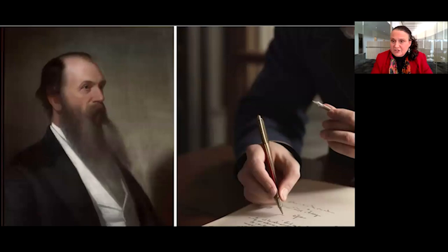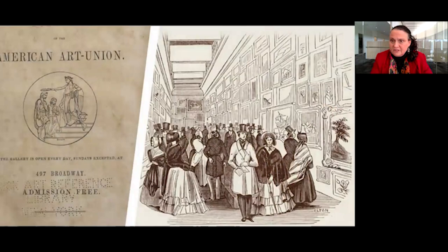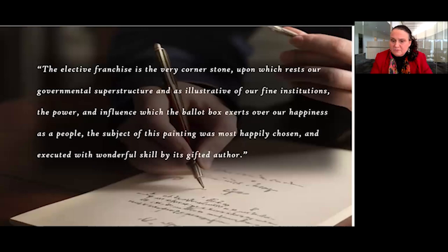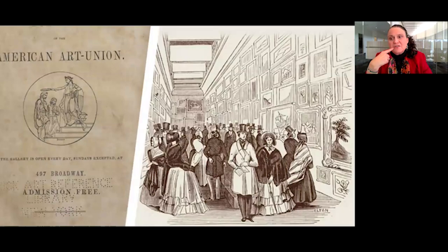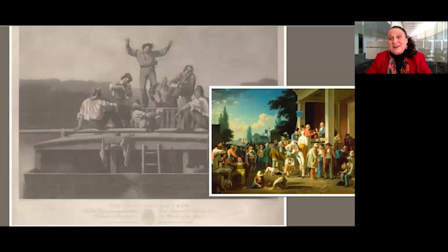In 1852, Bingham's closest friend, Missouri lawyer and statesman James Rollins, wrote a letter to the American Art Union in New York expressing such a sentiment. He hoped the Art Union would publish George Caleb Bingham's 1852 painting, County Election, as an engraving. The Art Union was founded in 1839 to advocate for creating a national art for the United States. Members received an engraving of one of the exhibited paintings as part of their $5 annual membership. Bingham's painting The Jolly Flatboatman had been chosen to be engraved by the Art Union in 1847.